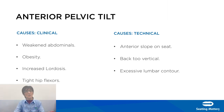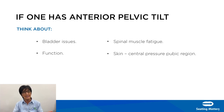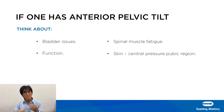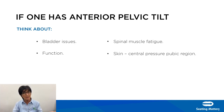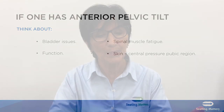The effects of long-term anterior pelvic tilt include bladder issues, because the forward tilt may impede urine flow, and for catheterized patients it may cause backflow of urine into the bladder. It also affects functional ability, can cause spinal muscle fatigue, and causes damage to skin in the pubic region.